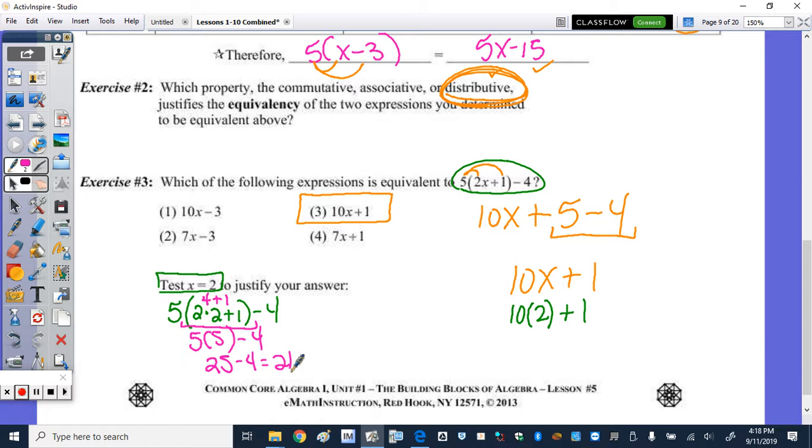Over here, multiplication before addition. 10 times 2 is 20 and 20 plus 1 is 21. It works out. That's great.